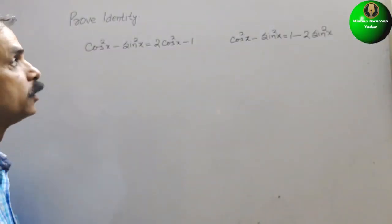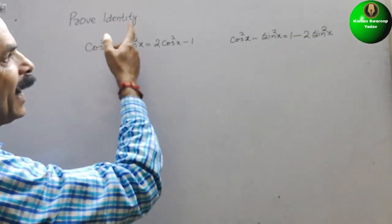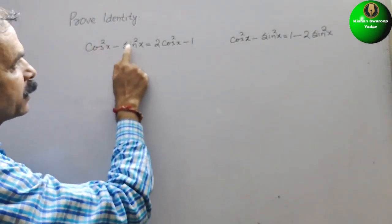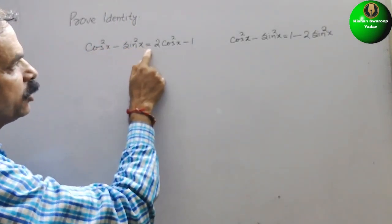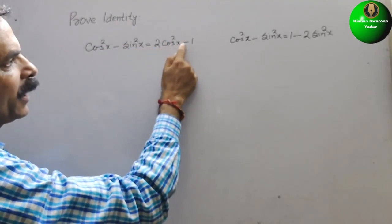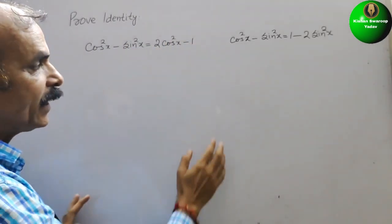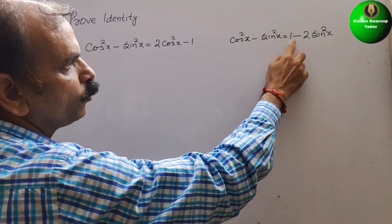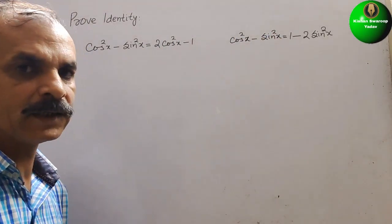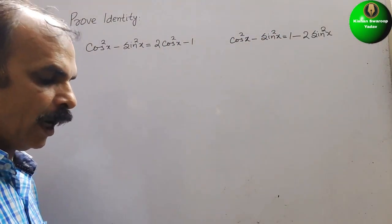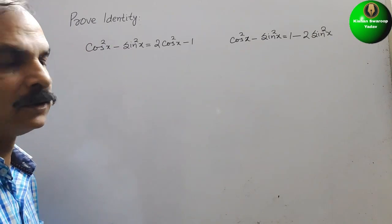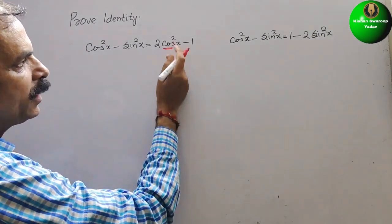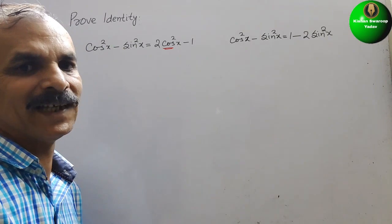Your question is to prove the identity. They have given: cos²x − sin²x = 2cos²x − 1, and the second identity is cos²x − sin²x = 1 − 2sin²x. If you see the RHS of the first identity, only cos terms are there.